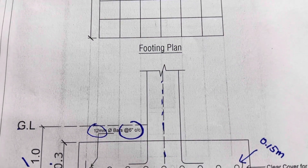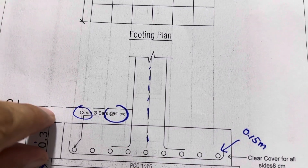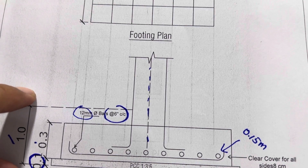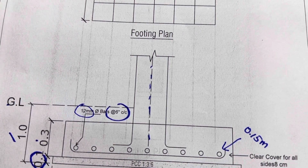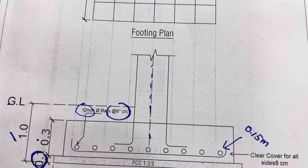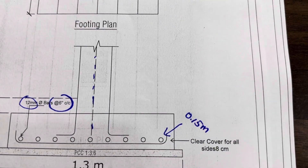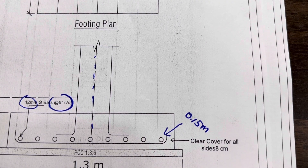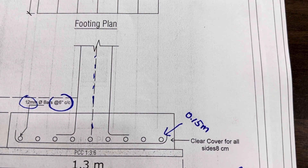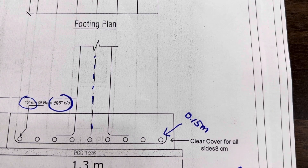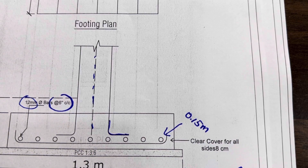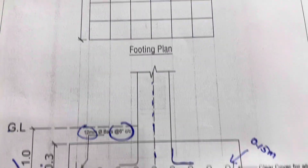The bed depth is 12 inches or 0.3 meter, and the depth is 1.1 meter. The hook length is 0.15 meter or 15 centimeter, and the leg length is 30 centimeter or 12 inches. This is the footing steel reinforcement detail.